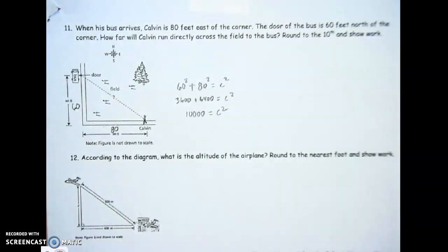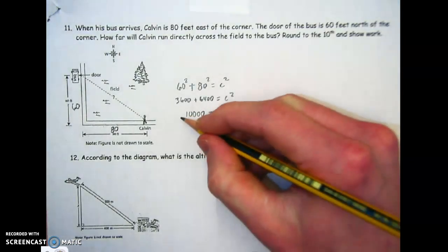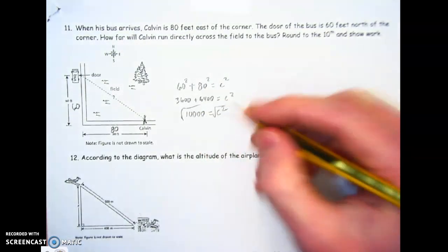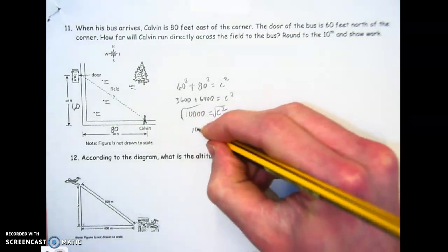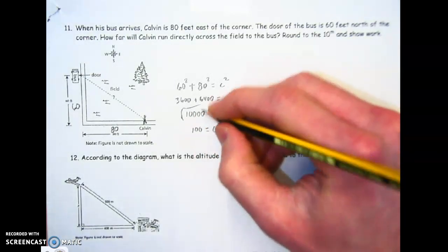We need to take the square root of both sides. C equals 100, and I need to make sure I write that's feet.